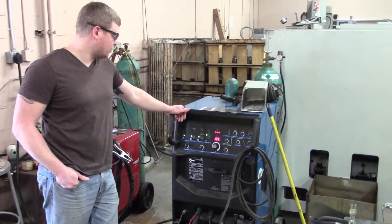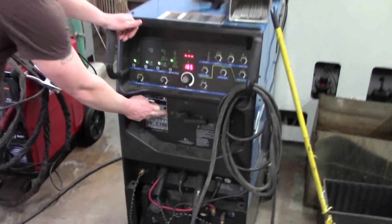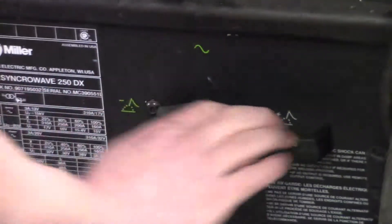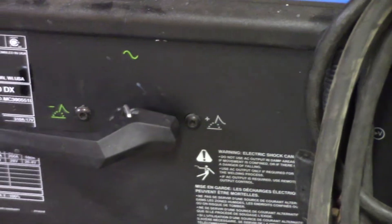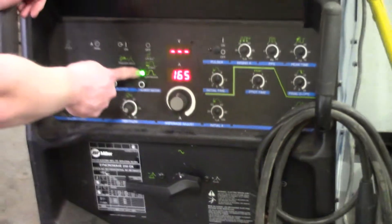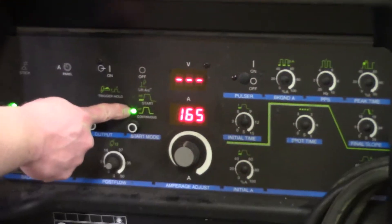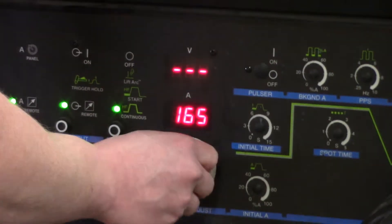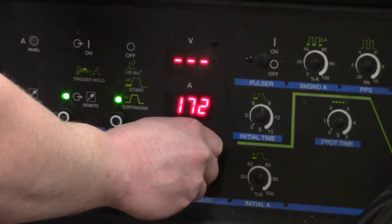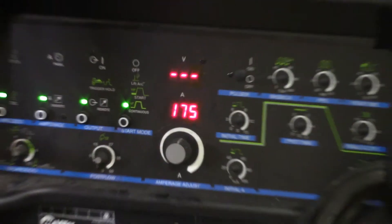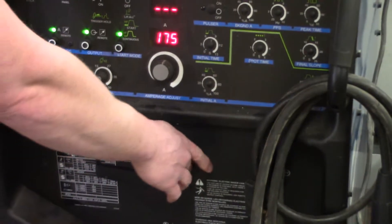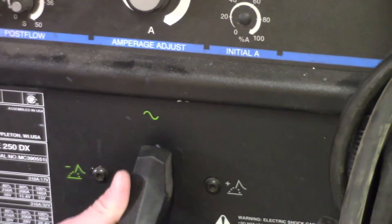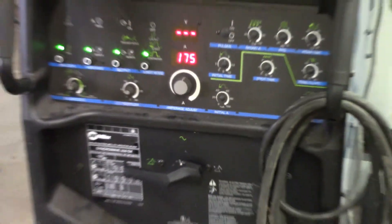Over here on the machine, it's on direct current electrode negative right here. Because we're going to ball it up, we're going to crank it over to direct current electrode positive first. This machine automatically goes to continuous. It was on high frequency start, now we're on continuous. We're going to run it around 175. When we get done with the direct current electrode positive balling up the tungsten, I'm going to switch it back up here to AC.